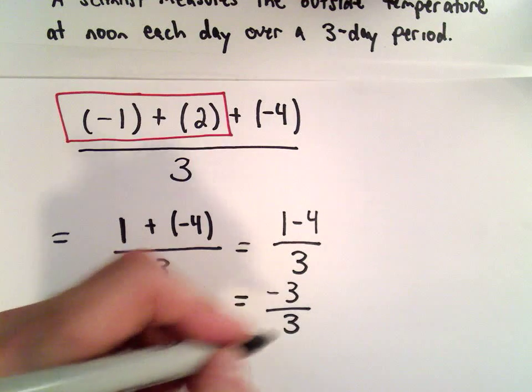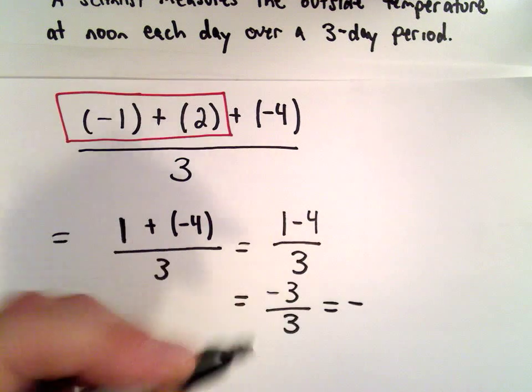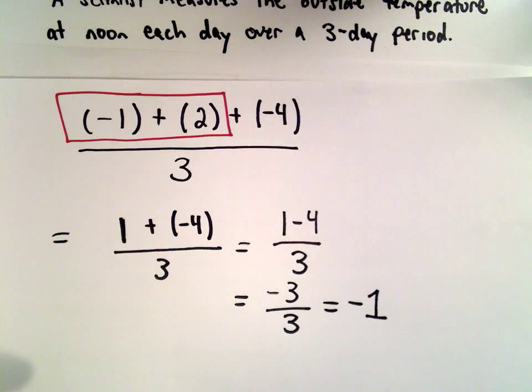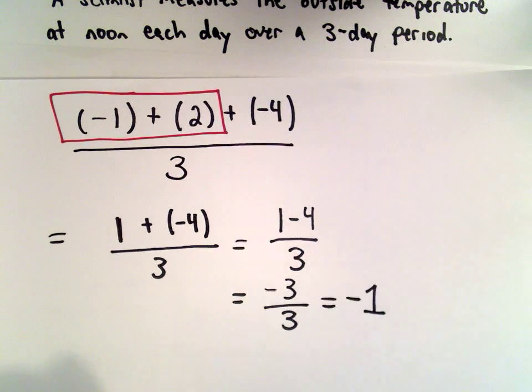We've got a negative divided by a positive. That's going to give us a negative number. Three divided by three is one. So the average temperature is going to be negative one degrees.